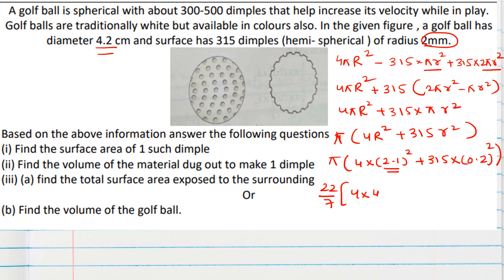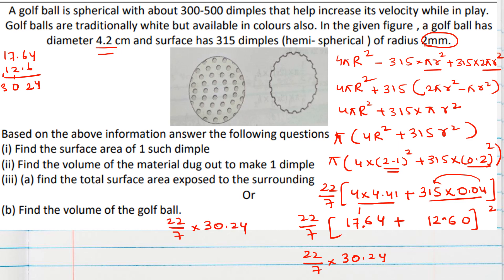4 into 2.1 means 4.41. 315 into 0.04. So now we will multiply these two and then finally we will add. So 17.64 for this we will multiply with 4: 12.60 we can write, which will be 12.6 ultimately. So 7.64 and 12.6 if we add, we will get 30.24. So 22 by 7 times 30.24. I will write here. We will divide here from 7. 7 into 4 is 28, then 7 into 3, it will go, 7 into 2. So 4.32 we will multiply with 22.